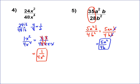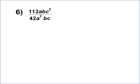And that's your answer. And then the last one that we have is a little bit harder. It's 112abc squared over 42a squared bc. Again, very important to do the 112 over 42 first. So let's just take care of that first.